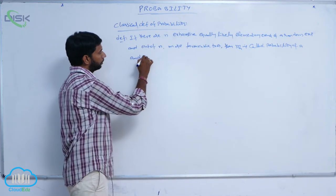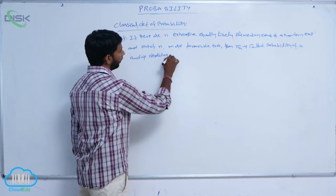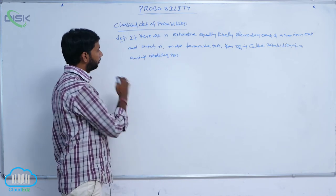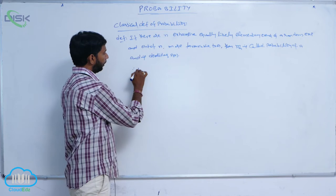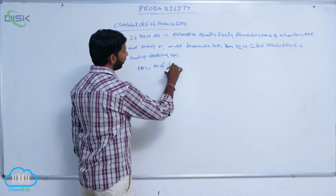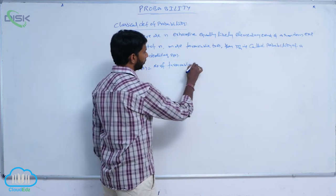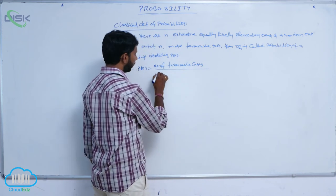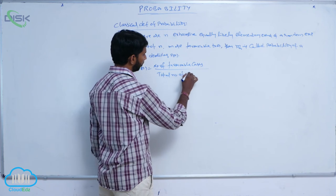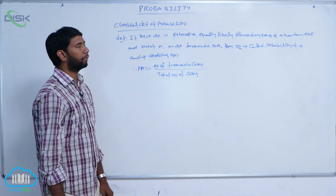and is denoted as P of A. Therefore, P of A is equal to number of favorable cases by total number of cases.